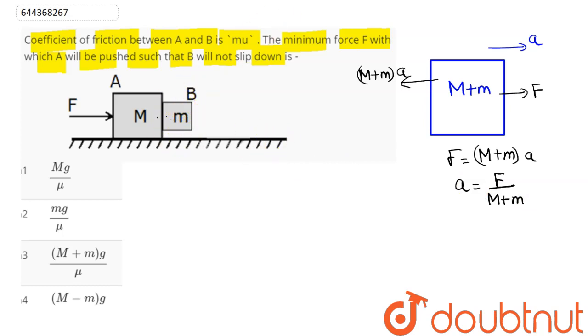Weight acting downwards is mg. Next we can say this system will accelerate to the right with common acceleration of magnitude a. So here we can say block A pushes block B to the right direction by normal reaction, and this moves to the right with acceleration a.